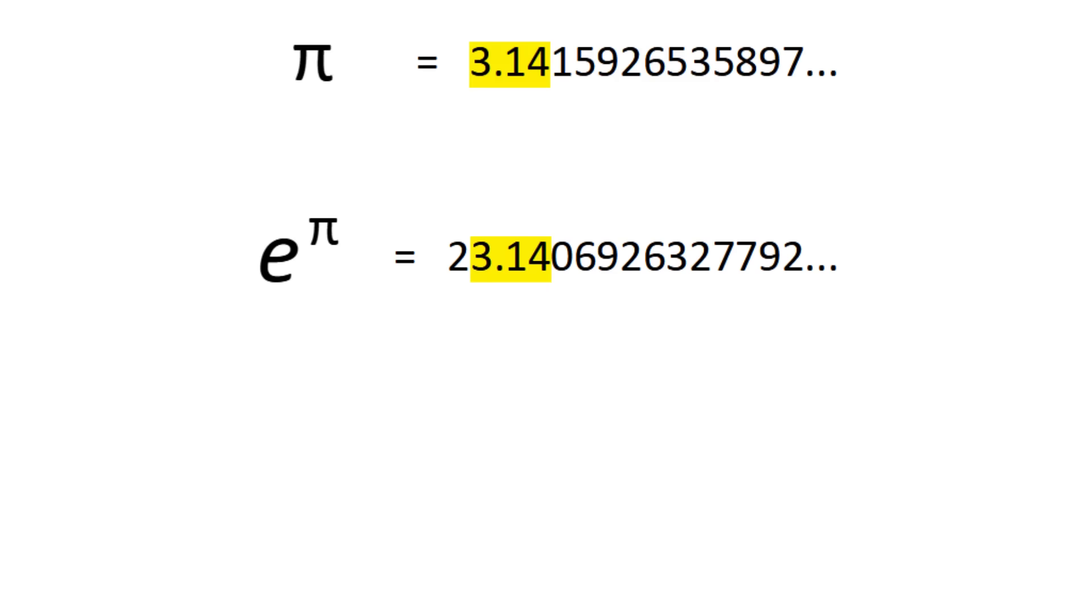Now that we've looked at e and pi, let's combine them. E is often used as a base for exponentiation, so what do we get with e to the pi? Well, it's 23.14, which is remarkably close to 20 plus pi. In fact, e to the pi minus pi is 19.99909979.